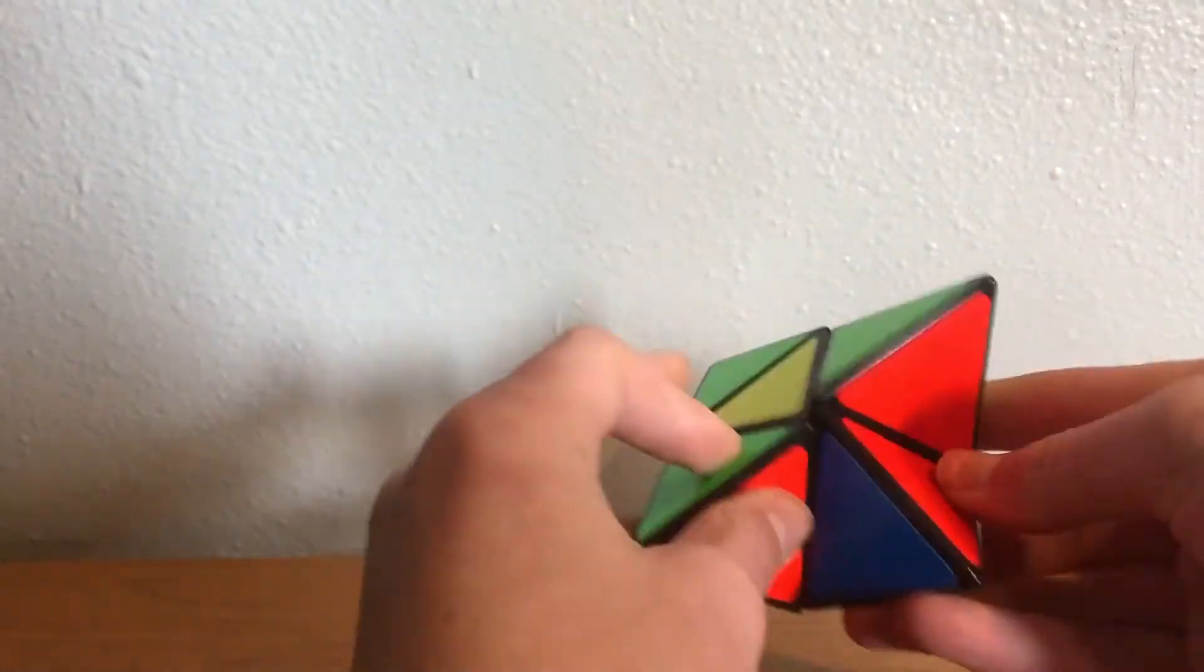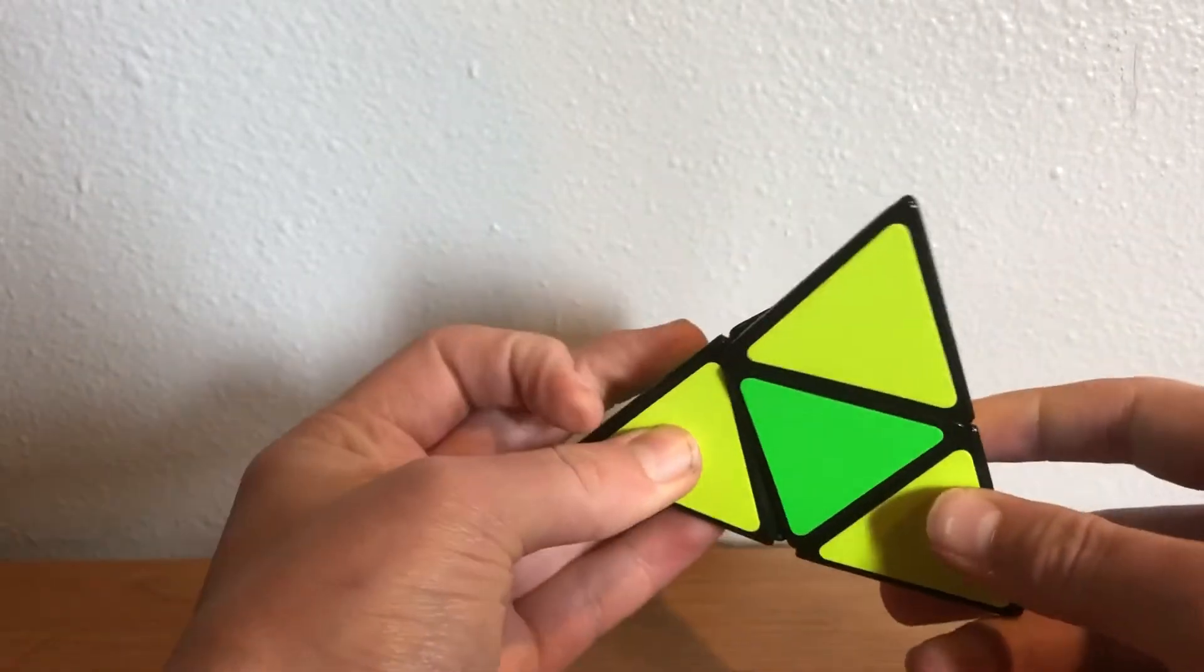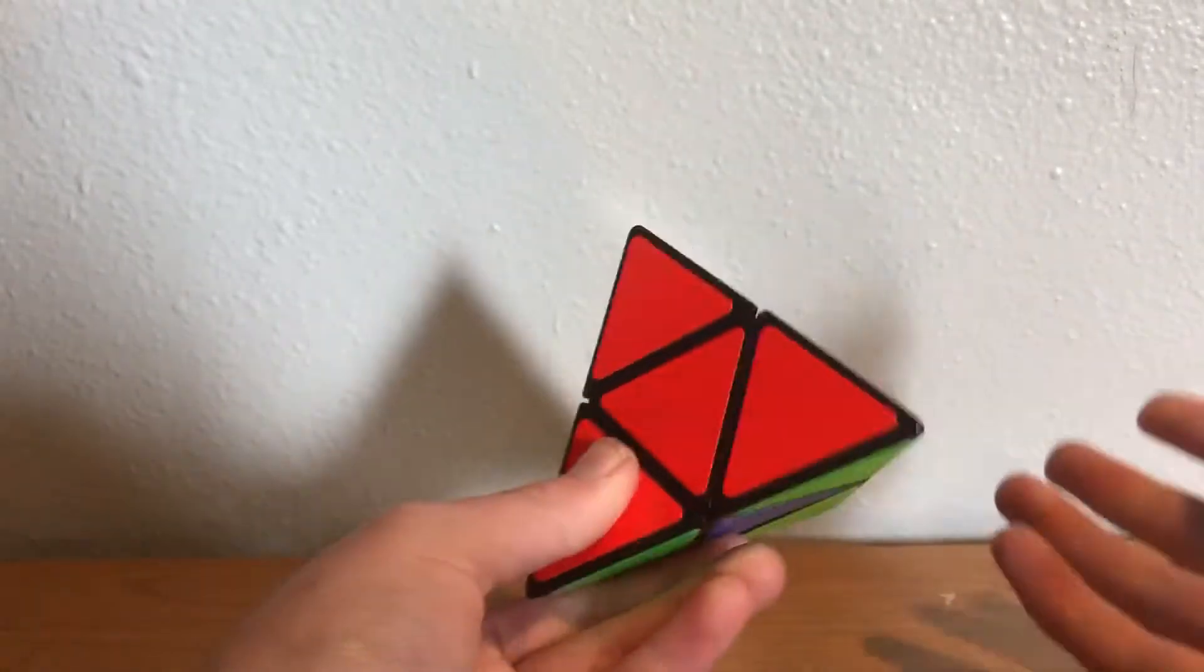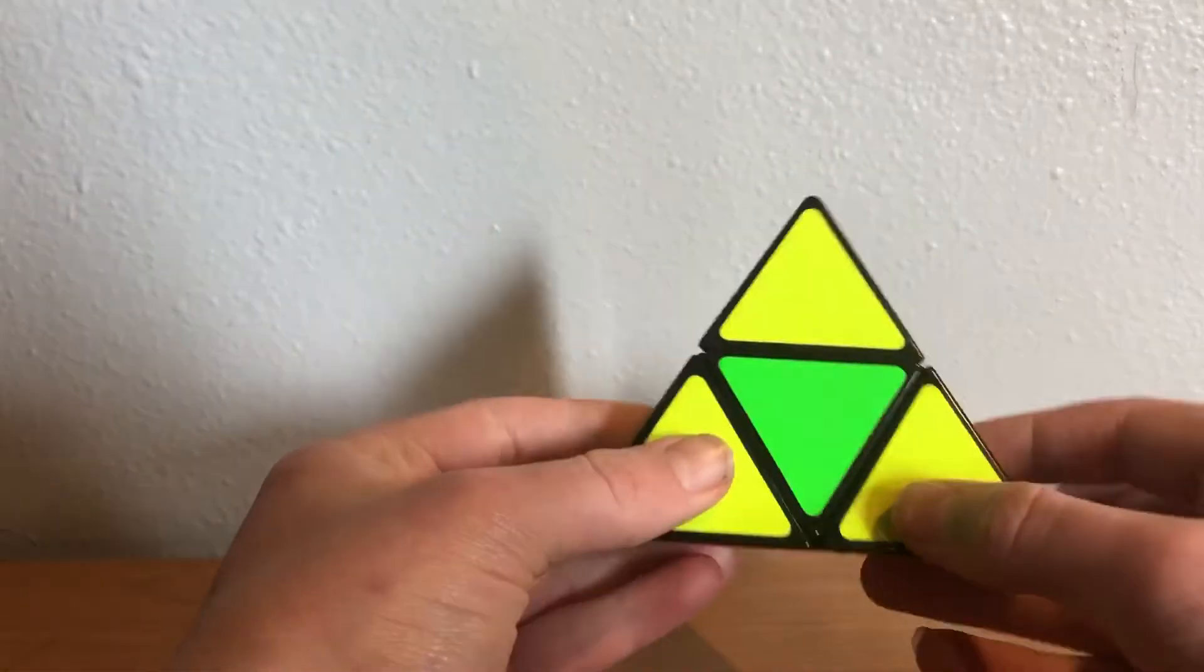But you'll see, if you do that alg, and then you solve it right here, you actually get a U-perm. So I knew that there was going to be some sort of U-perm connected here. And here it is.